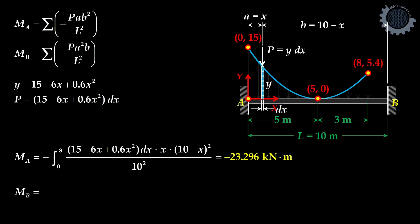Moment at B is negative P times A squared times B all over L squared, sum up from 0 to 8. We have the answer for moment at B.